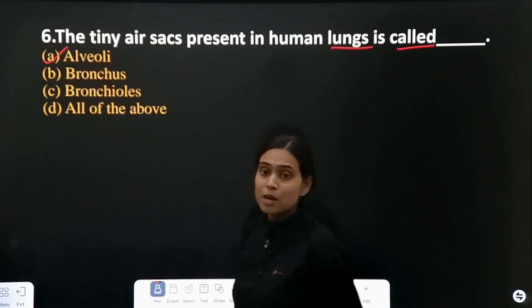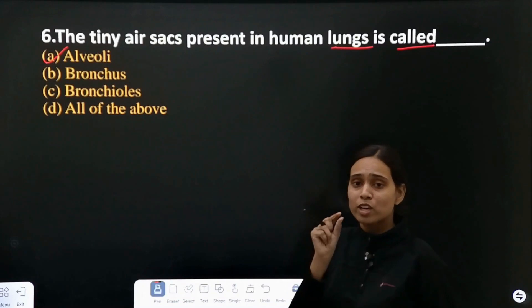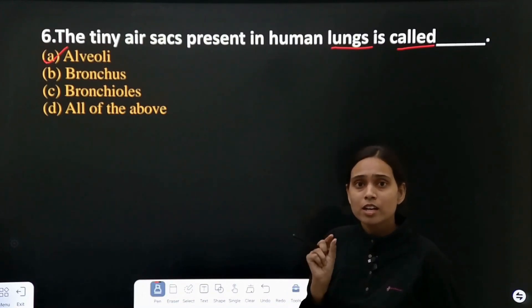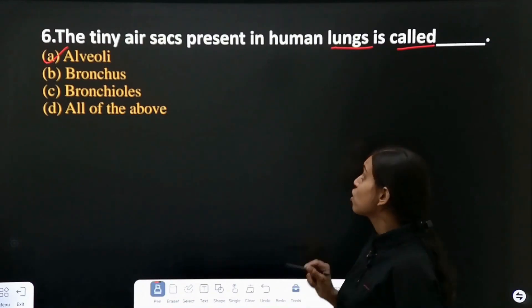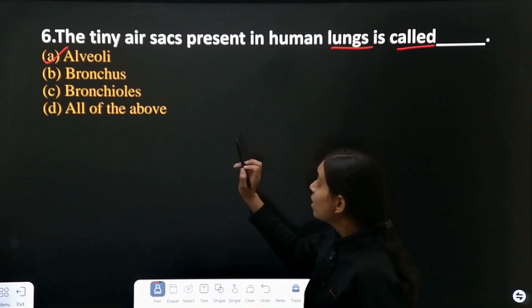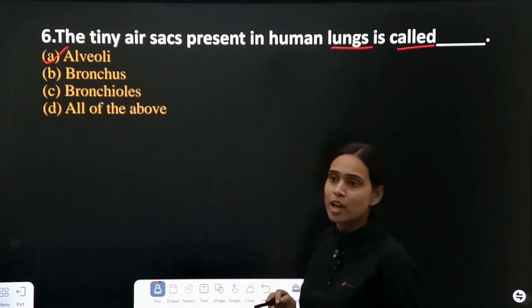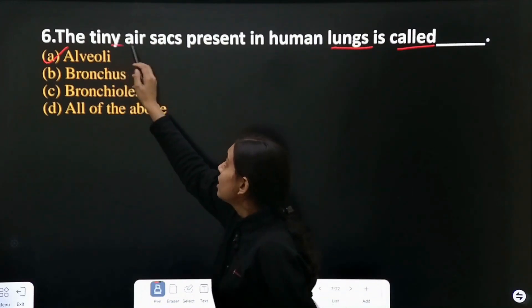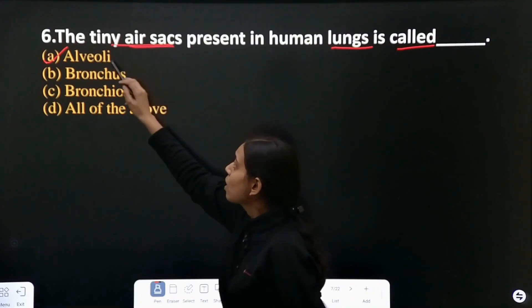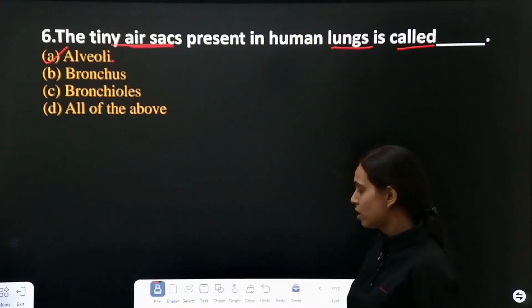The alveoli are present in the lungs — that is where gaseous exchange happens. They are the tiny air sacs present in the lungs. What are they called? They are called alveoli.